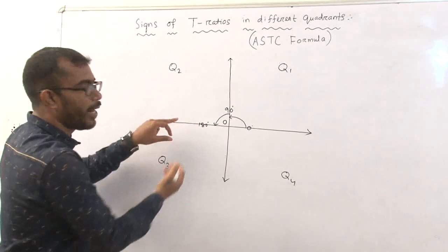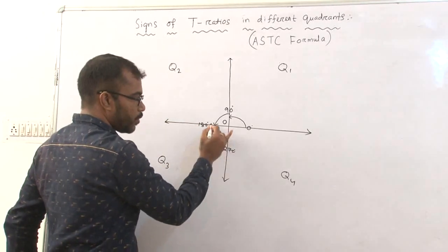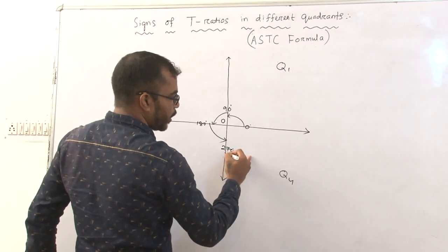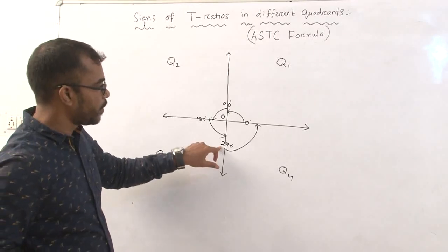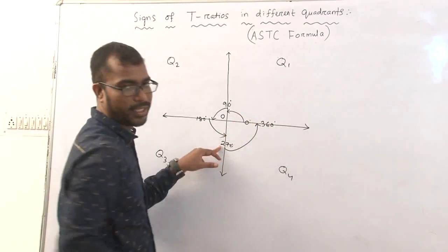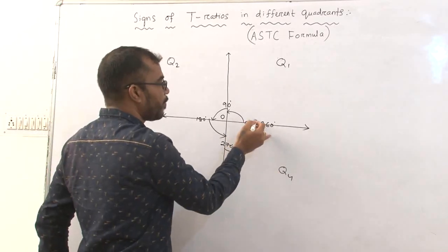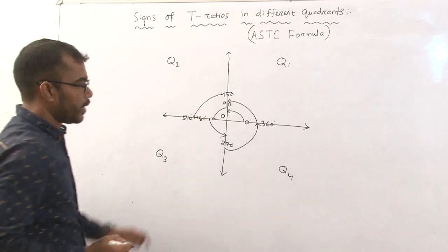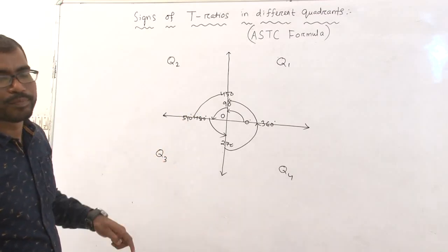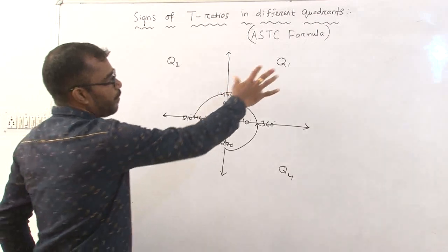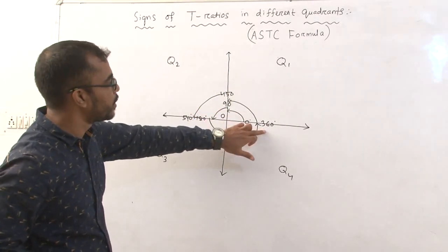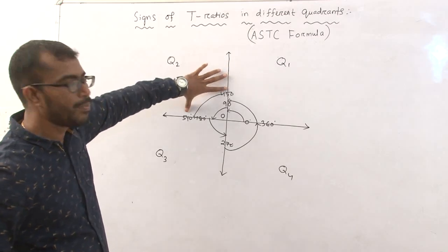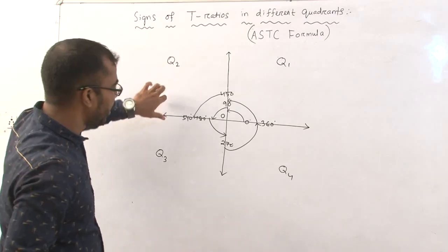In Q3, if we add 90°, we get 270°, so Q3 lies from 180° to 270°. Similarly, in Q4, 270° plus 90° gives 360°. That is the fourth quadrant. We can keep adding 90° to get 450°, 540°, and so on. So Q1 also corresponds to 360° to 450°, Q2 to 450° to 540°, and so on.